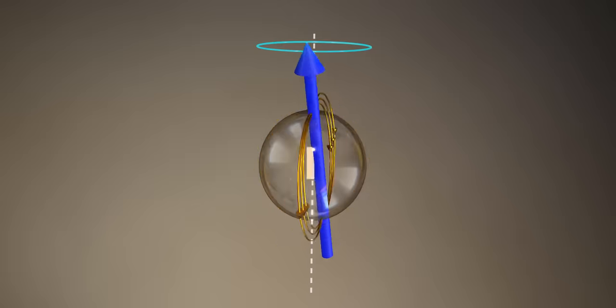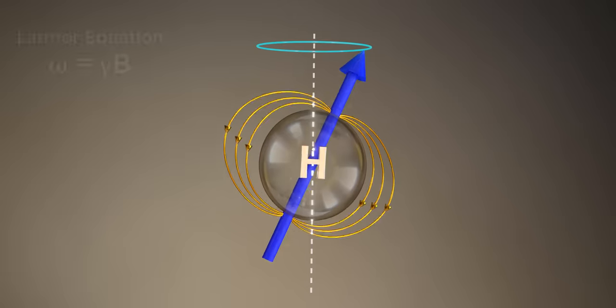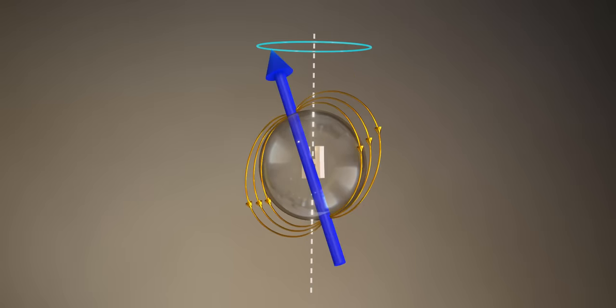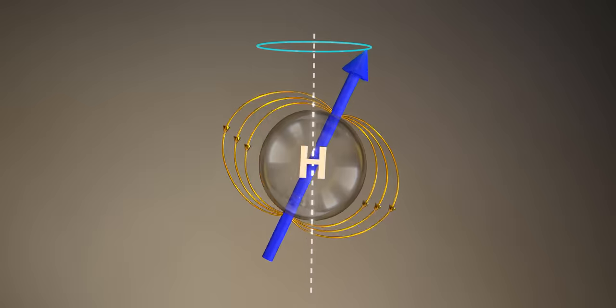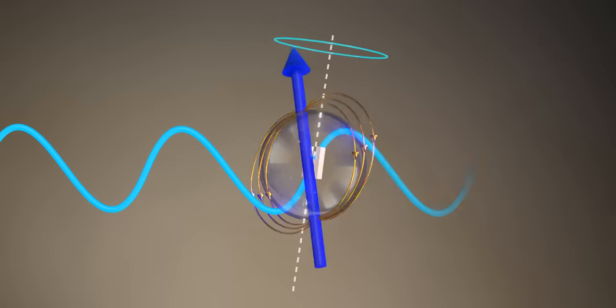This resonance frequency is quite important in MRI and is determined using the Larmor equation. Let's move on to the next step. So far, we have aligned all the hydrogen atoms in the direction of the magnetic field. Let's strike a radio pulse on a hydrogen atom.